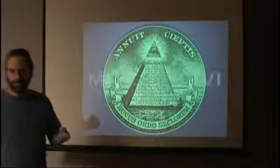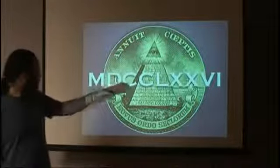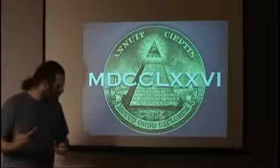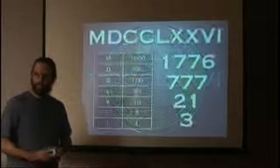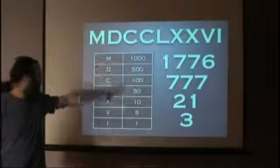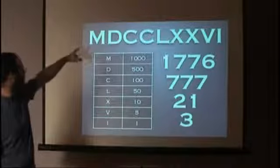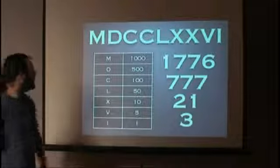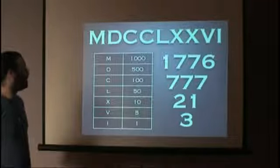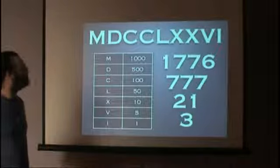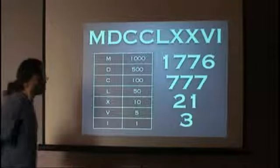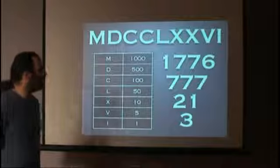It gets even better when you start to look at that date on the bottom of the pyramid. That date is M-D-C-C-L-X-X-V-I in Roman numerals, and that totals 1776. Here's how it breaks down. This is a chart of the letters and their corresponding numerical values. M is 1,000, D is 500, C is 100 twice—so you're up to 1,700. L is 50, that's 1,750. X is 10, which you have twice—1,770. V is 5, that's 1,775. And I is 1—1,776.